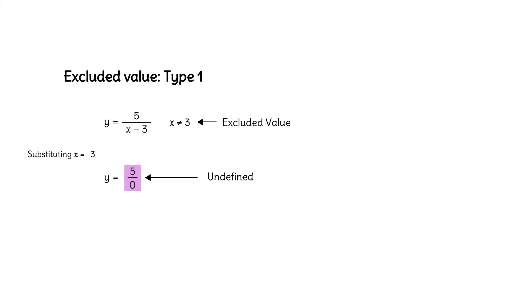How does that impact the graph of this function? If we substitute x-values that are close to 3, like 3.1, we get a large positive y-value of 50. The same is true when we substitute 2.9. We get a large negative y-value of negative 50. The closer we get to 3, the larger the y-values this function returns.